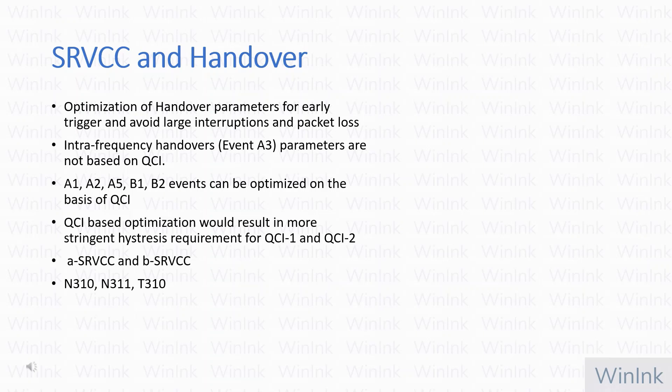Handovers based on A1, A2, A5, B1, and B2 events have separate hysteresis, thresholds, and offsets configurable per QCI. You can have different hysteresis, offset, and threshold for QCI-1 and different parameters for QCI-8 or QCI-9. As a system designer, you can use QCI-based parameters to optimize VoLTE and normal data traffic independently. There will be stringent hysteresis requirements for QCI-1 and QCI-2 to ensure no packet loss, no delay, and no jitter for your Voice over LTE.